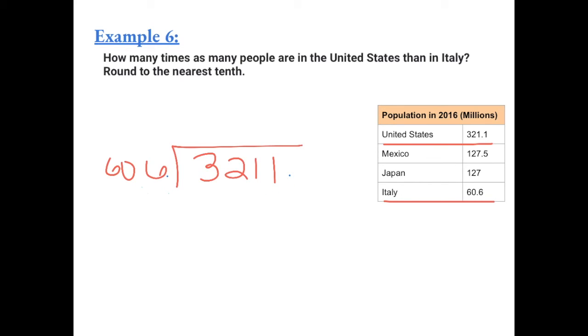606 goes into 3211 five times, which equals 3030. Now we're going to have to borrow. We get 11 and 1, so now we have 8 and 1.